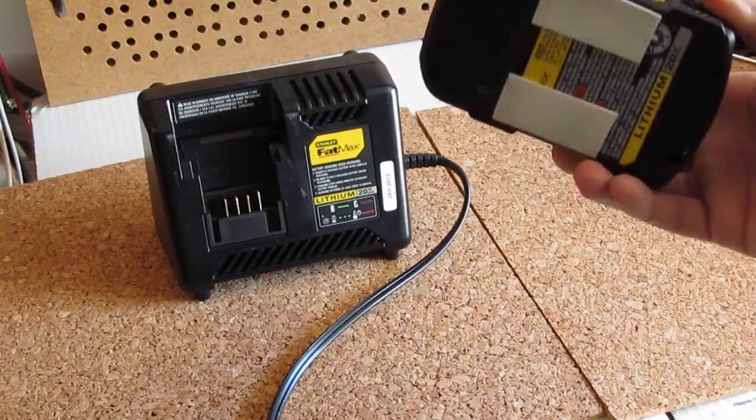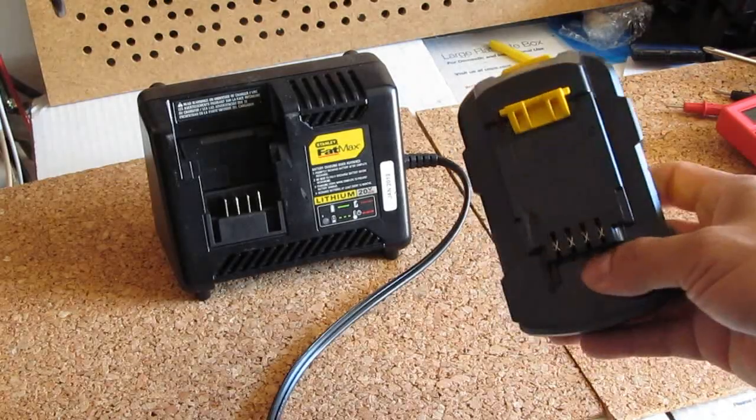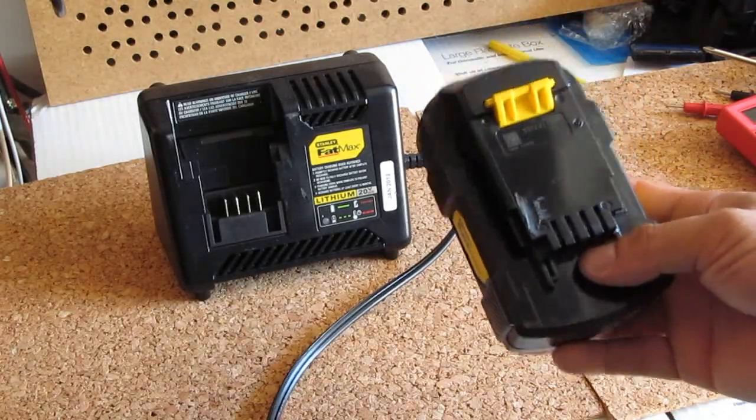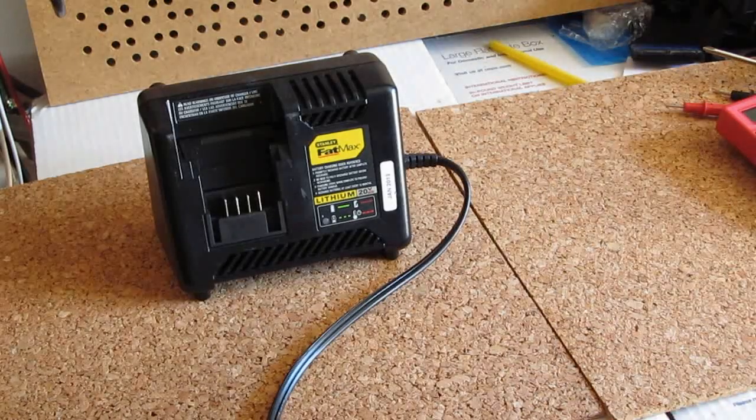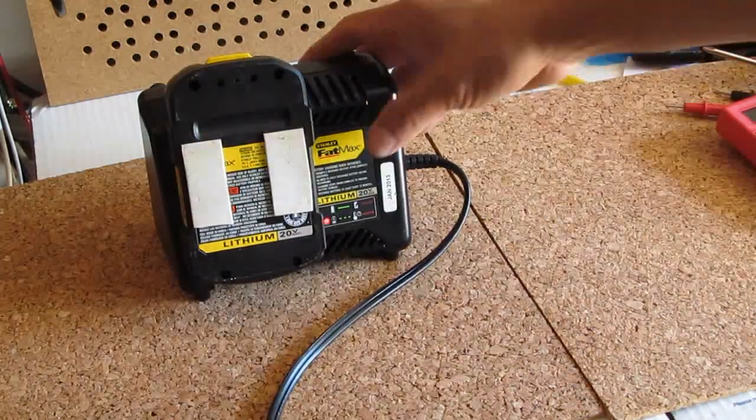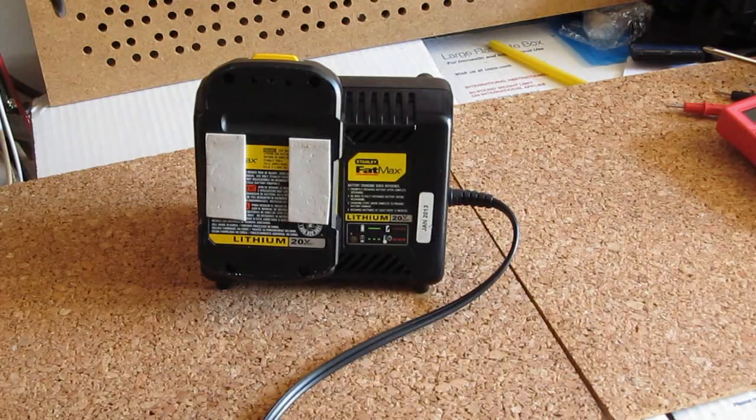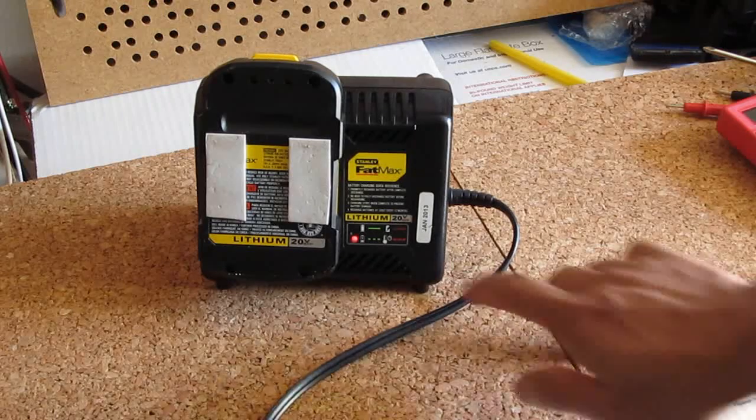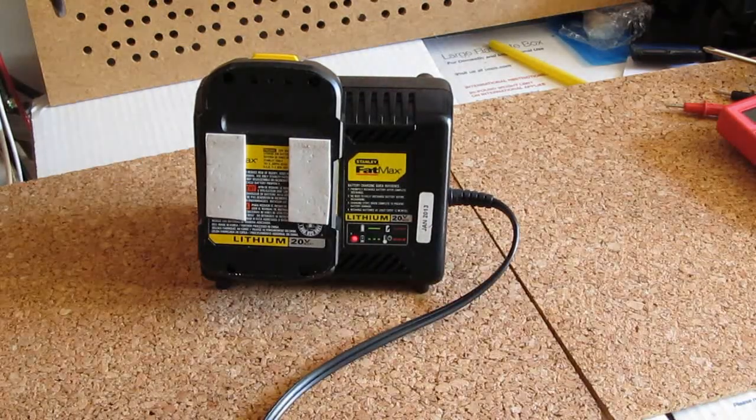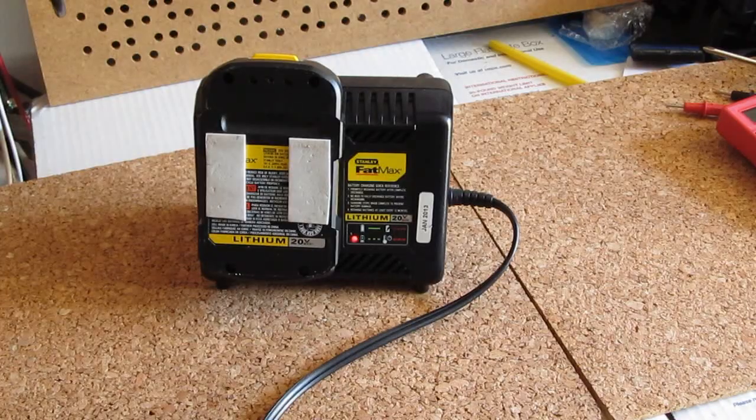What I have here is a 20-volt Stanley Fatmax cordless tool battery and it does not want to charge. The moment I put it in, the flashlight is flashing. I leave it for hours and it still doesn't charge and this light keeps flashing. So that means the battery does not take a charge.